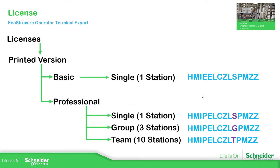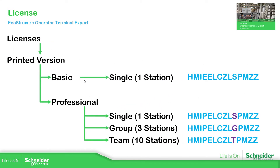If we continue with this, we have the reference for the HMI. It's probably a little bit long, so I recommend you to check the catalog — this one for the basic and this one for the professional. You can see it starts with HMI, PEL, C, Z, L, and then there are three letters that change: S for single, G for group, and T for team.